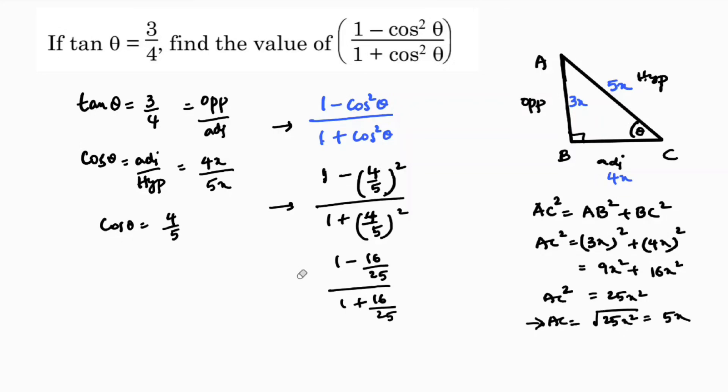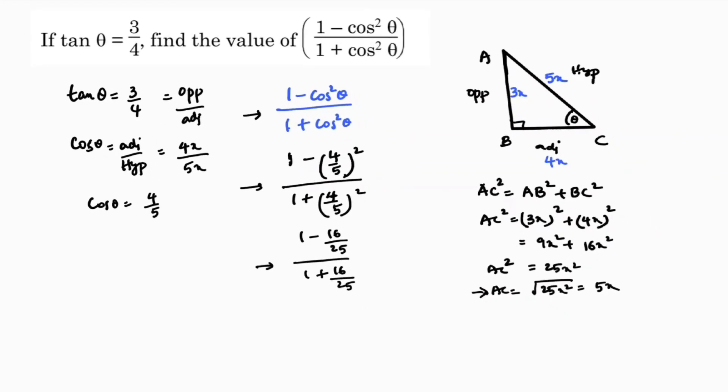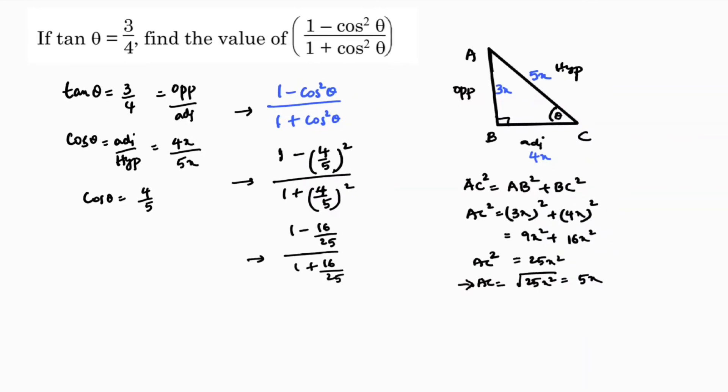So next step: 1 minus 16/25, taking LCM 25 in the numerator gives (25-16). In the denominator also taking LCM, 25 plus 16. The 25s cancel, so 25 minus 16 is 9, 25 plus 16 is 41.